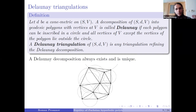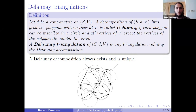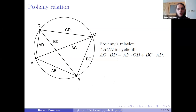Any two Delaunay triangulations can be connected via a sequence of flips through Delaunay triangulations. So it is very reasonable to start from a Delaunay triangulation and try to deform our metric discretely conformally with respect to it. There is a famous fact from Euclidean geometry showing that Delaunay triangulations suit very well to this setting: the Ptolemy relation, which states that a quadrilateral is cyclic if and only if the product of diagonals equals the sum of products of the opposite sides.